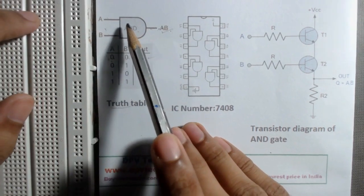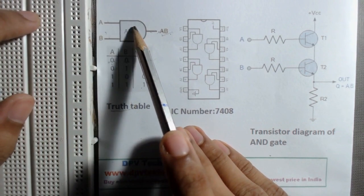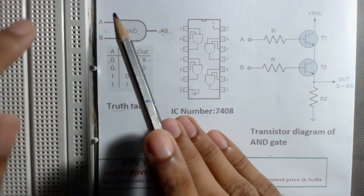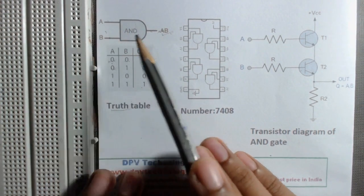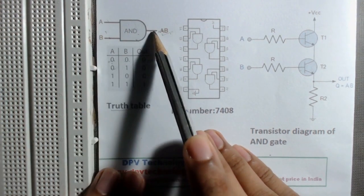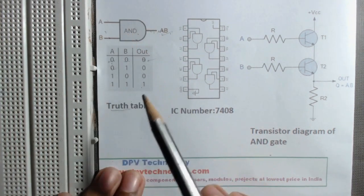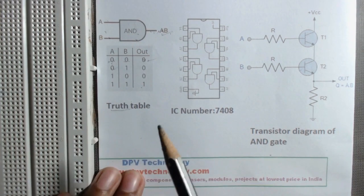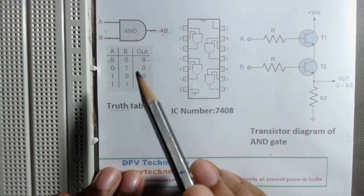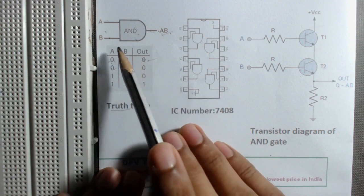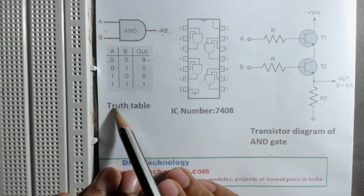Here is the logic symbol of an AND gate. An AND gate has two input terminals and one output terminal. There are also AND gates with more than two terminals. The behavior of a logic gate can be expressed by its truth table.